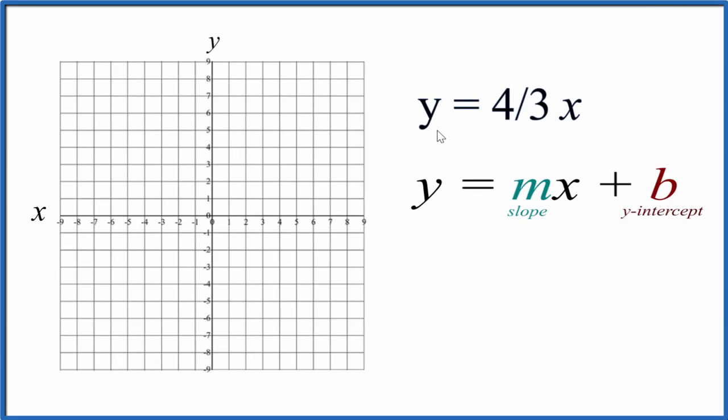Let's graph the linear equation y equals four-thirds x. We're going to use slope-intercept form to do this. You could use a table of values and that would work as well, but slope-intercept form, that's a little bit quicker.